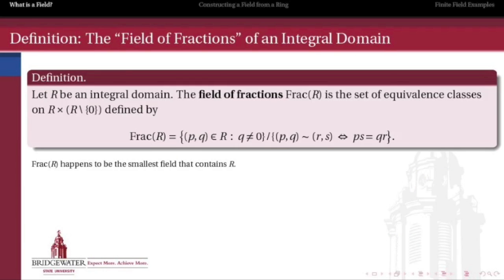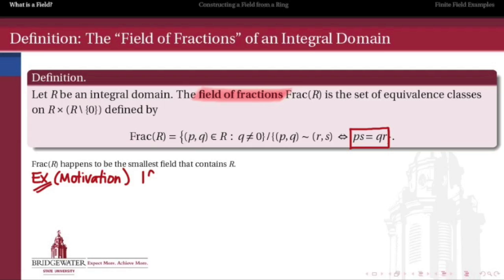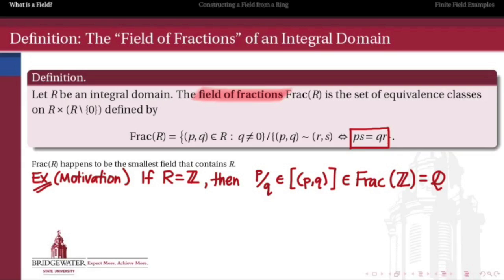The rational numbers are, in fact, an example of what's called a field of fractions. The definition of the field of fractions of an integral domain is: it's a set of equivalence classes (p, q) where q ≠ 0. Two elements are defined to be equivalent if the cross products are equal — that is, if p₁q₂ = p₂q₁. The motivation is how we build the rational numbers out of the integers: the equivalence class of (p, q) is what we mean when we write the fraction p/q, and two fractions are equivalent if their cross products are equal.